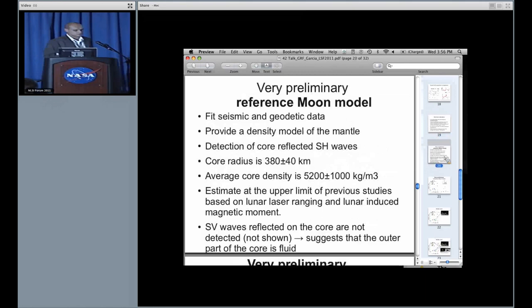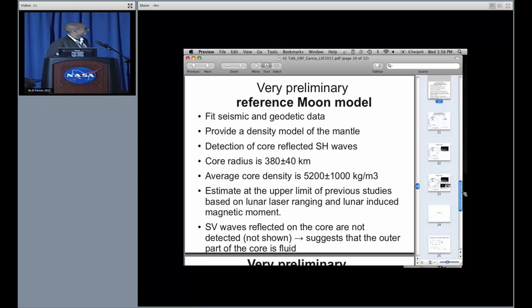We believe that we really tried to produce a reference model in the way it fits seismic and geodetic data. We provide a density model for the mantle. We've detected core reflected S waves. The core radius estimate and the average core density present large error bars, respectively 10 and 20%. These estimates are at the upper limits of previous studies, meaning for the core radius. But the error bar is so large that, in particular for the core density, you can put almost all what you want in the core.